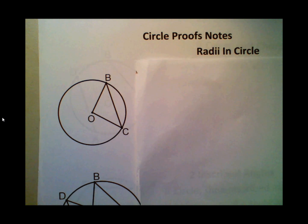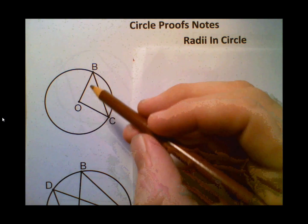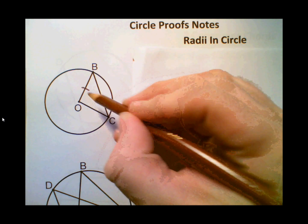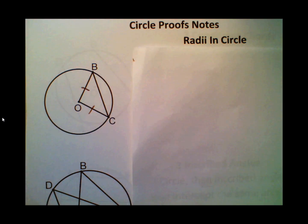First thing, a radius in a circle. Now you should remember that a radii is a line that goes from the center point to the edge, and it's always congruent. So in this case, OB and OC, since they're both radii, are going to be congruent to each other. So the reason you can use in the proof is that if circle, then radii are congruent.